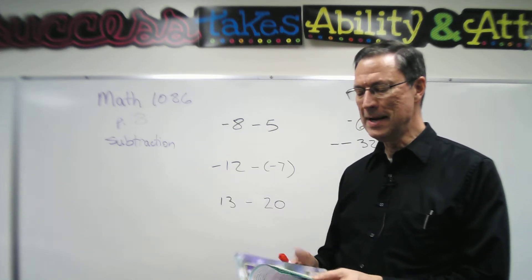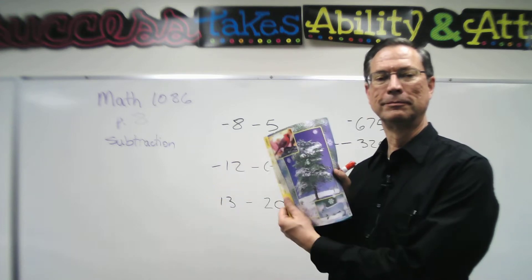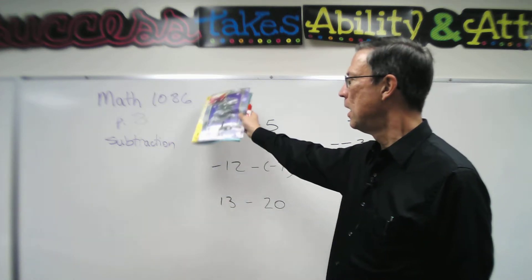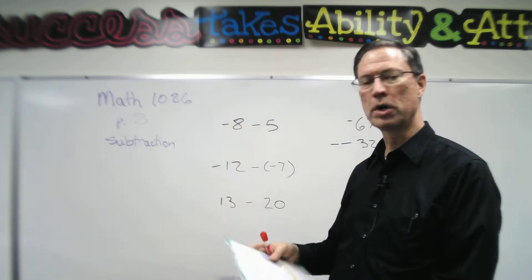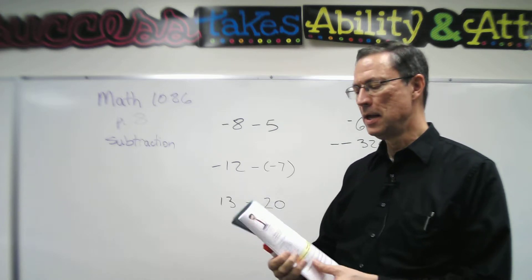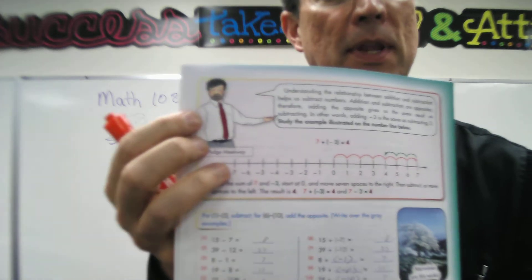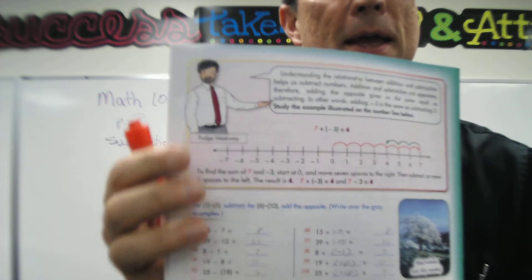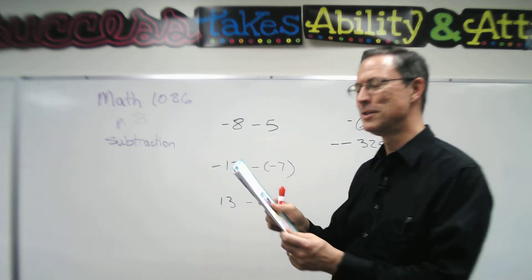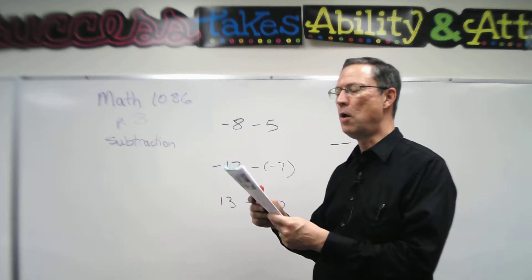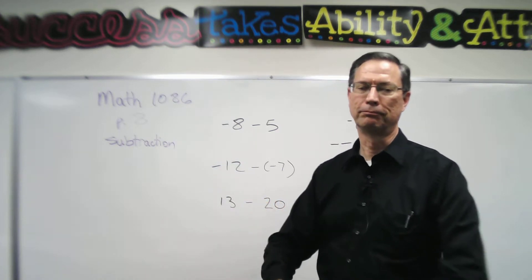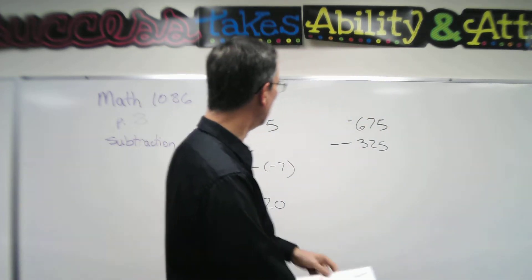I'm in pace 1086, page 8, and we're going to talk about subtraction. I'm borrowing a student's pace, and look what he did. You've never done that to your paces, have you? He added a beard and mustache to Pudge Meekwe. All right, that's a demerit. Here we go.